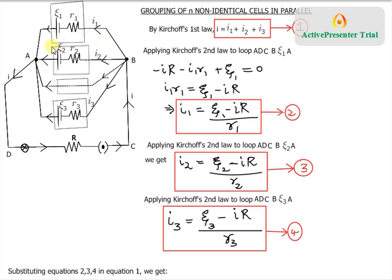We start with Kirchhoff's first law to get a relation between the currents — the junction rule. The sum of all the currents entering the junction should be equal to the current which leaves the junction. So I1, I2, I3, I4, and so on up to In all enter and come out as I. We are doing it for three currents here, but we can always extrapolate it for N number of branches or N number of cells.